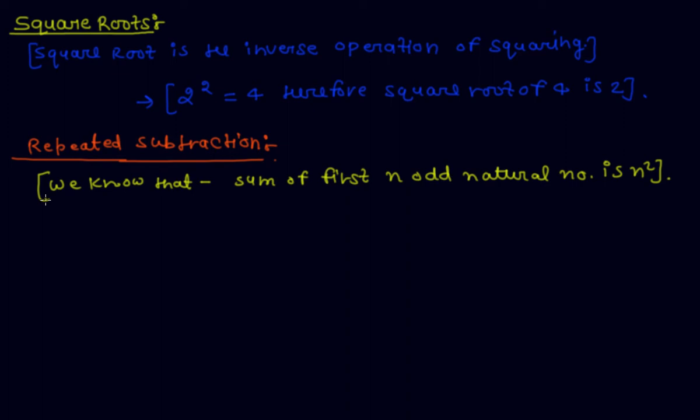Now let's take one more example. If I find square root of 64, square root of 64, so now I subtract one by one.